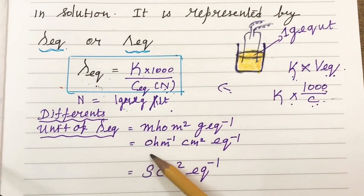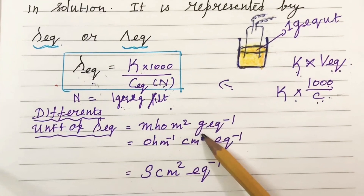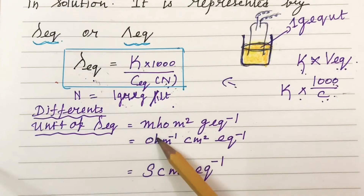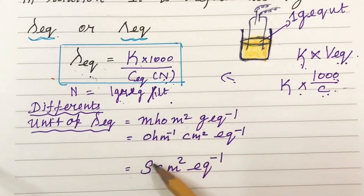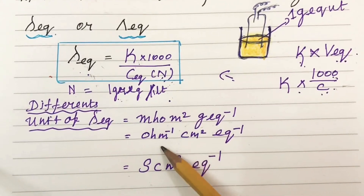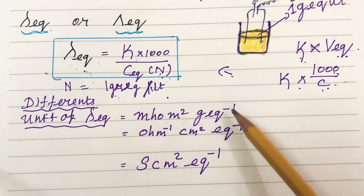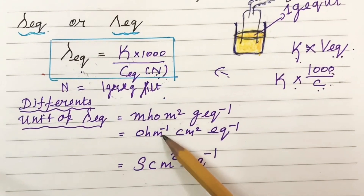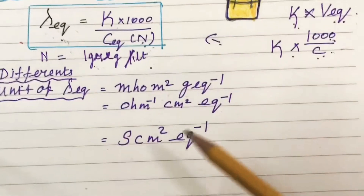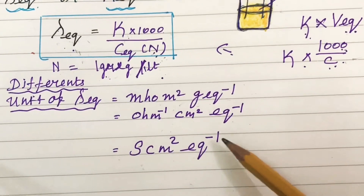The units of equivalent conductivity, taking into account 1 gram equivalent weight of the substance in 1 liter and the conductance of the solution, can be given as: S·m² gram-equivalent⁻¹; or ohm power minus 1, centimeter squared, equivalent power minus 1; or S·cm² equivalent power minus 1.